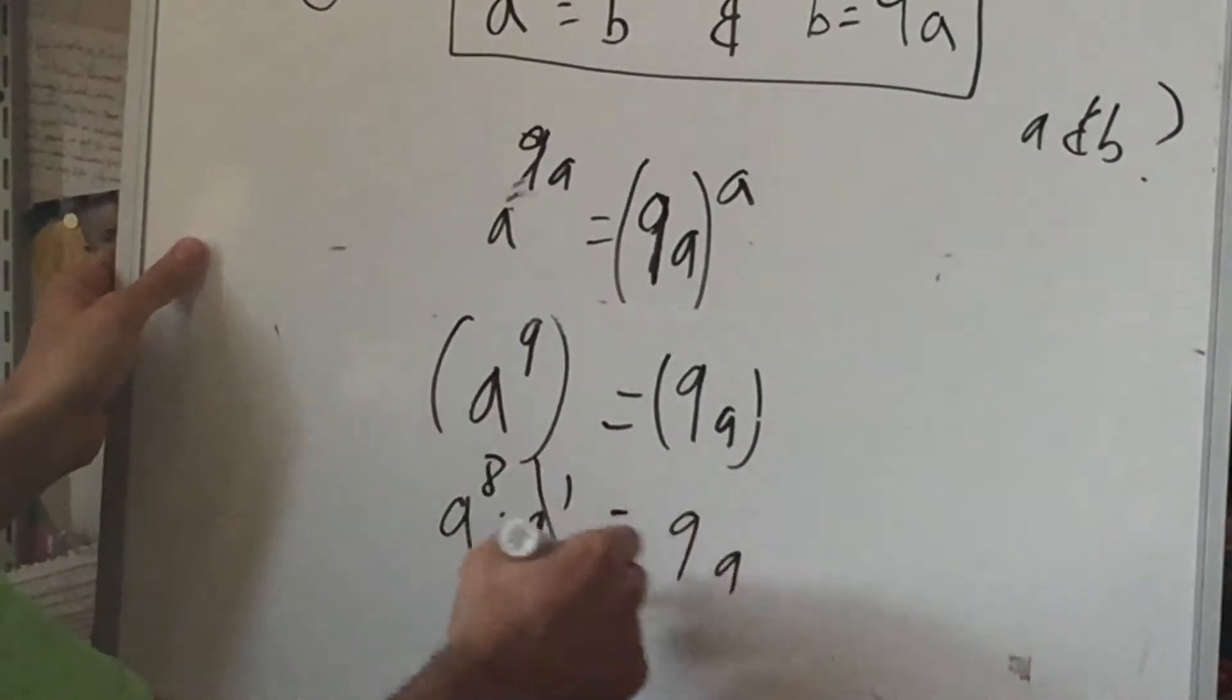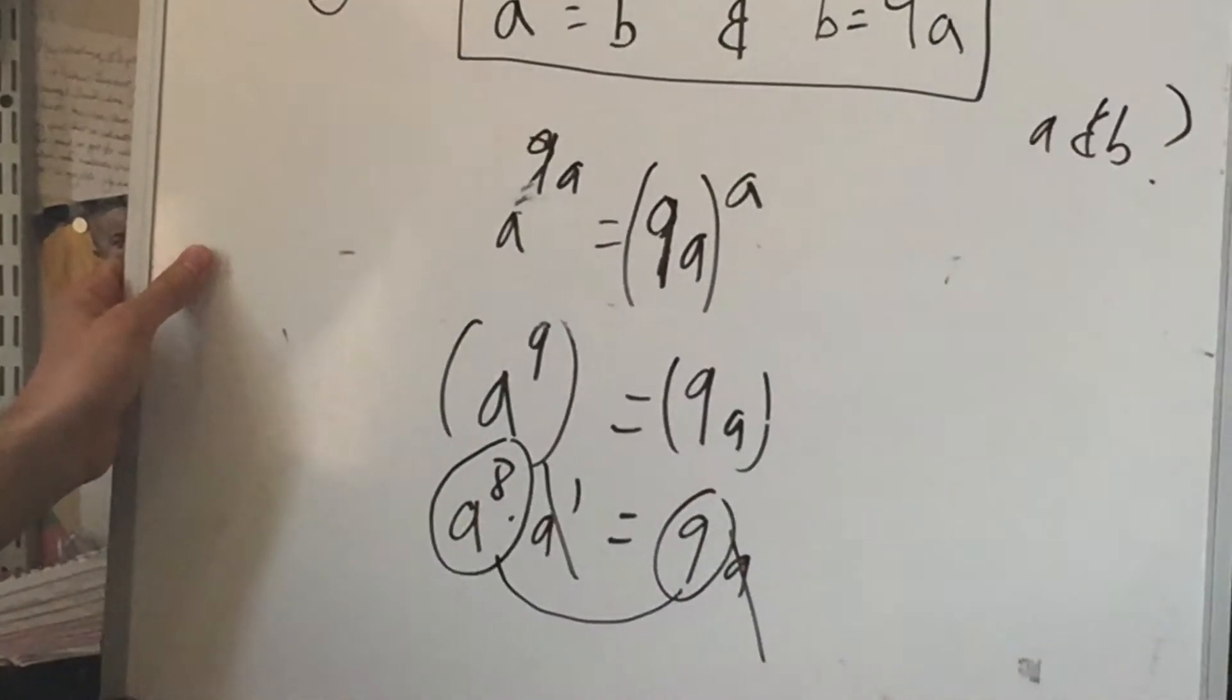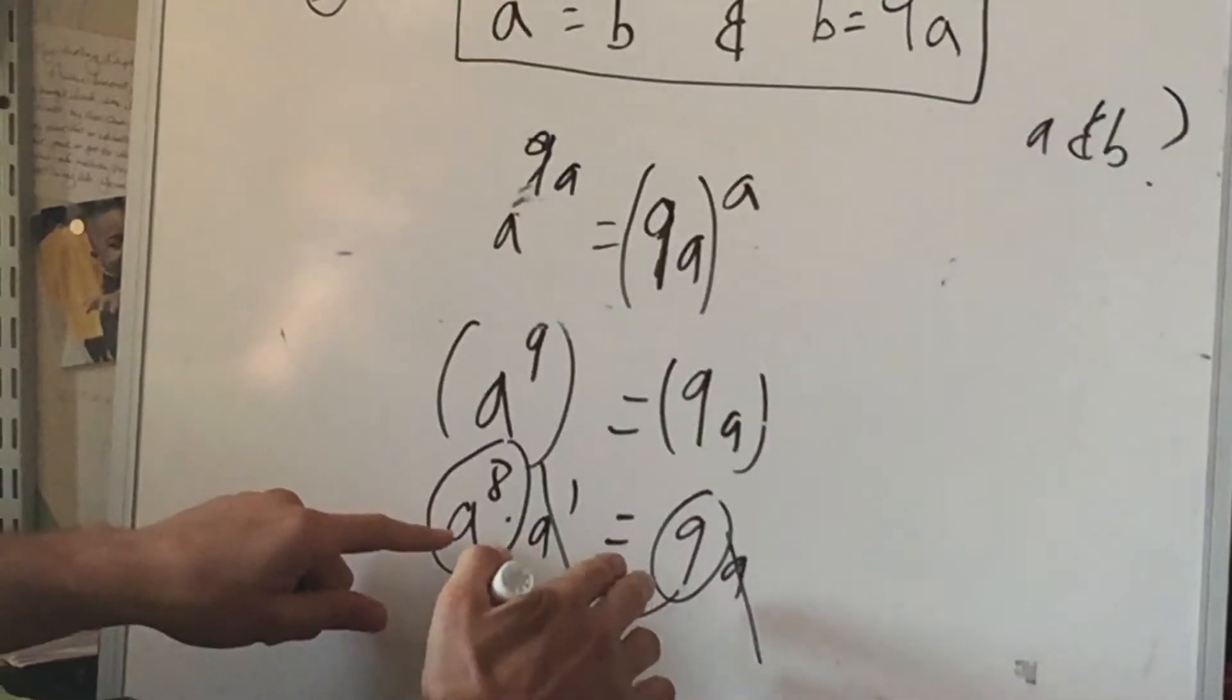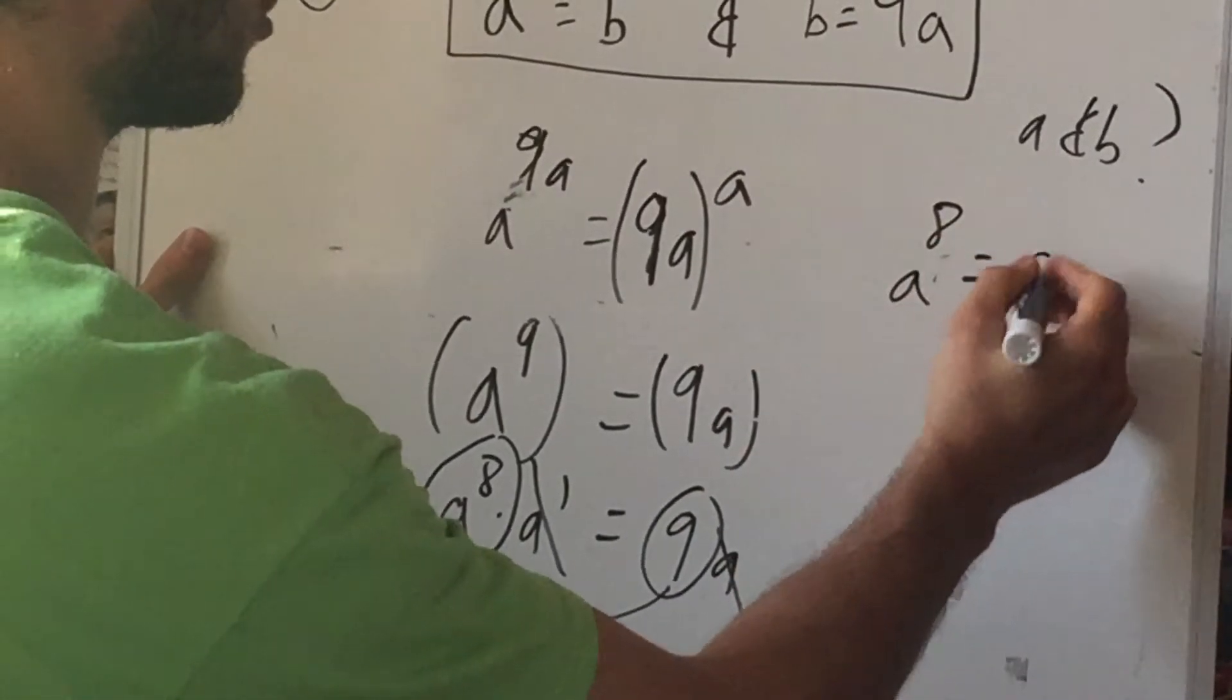So they both share an A. So therefore we can get rid of this part. So this part must equal that part. So A to the 8th power is equal to 9.